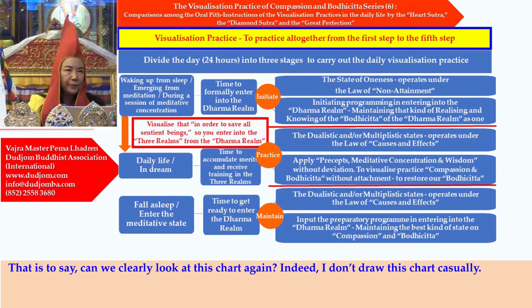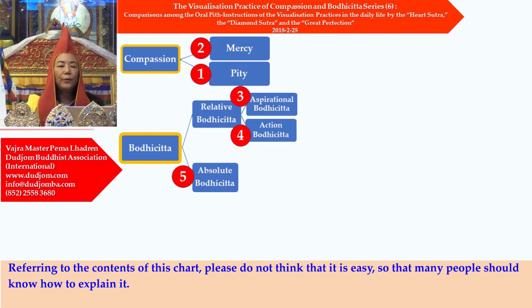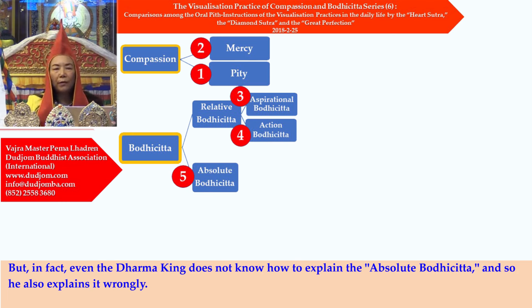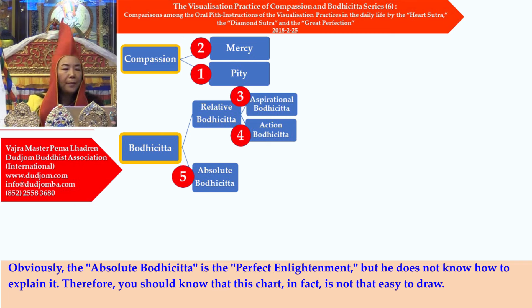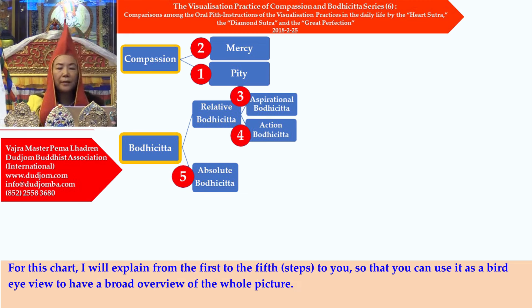You have to visualize that in order to save all sentient beings, you have to enter into the three realms from the Dharma realm. Hence, you can step across from the states of waking up from sleep, emerging from meditation, or during meditative concentration, to the states of daily life or in a dream — and this is how to step across. Can we clearly look at this chart again? I don't draw this chart casually. Please do not think it is easy, such that many people should know how to explain it. In fact, even the Dharma king does not know how to explain the absolute bodhicitta and explains it wrongly.